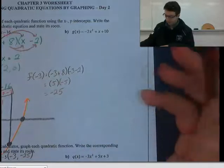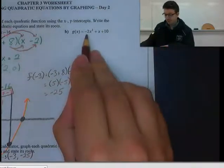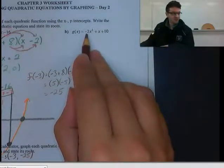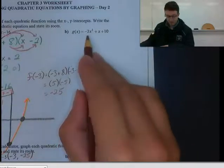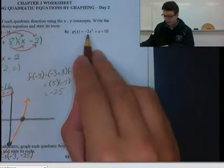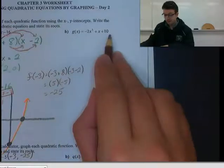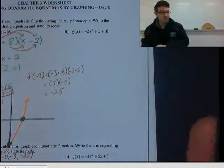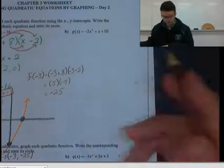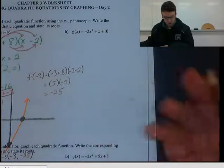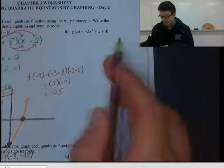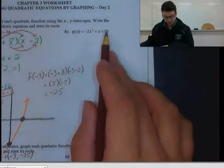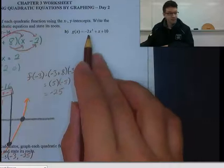Alright, so for part B, we have a complex trinomial here. We have negative 2 here. Now, your first thing you might want to do is try looking for a common factor, but I don't see one. So in this case, we're going to have to use our x method, our guess and check x method, or decomposition, in order to figure out how we can factor this.